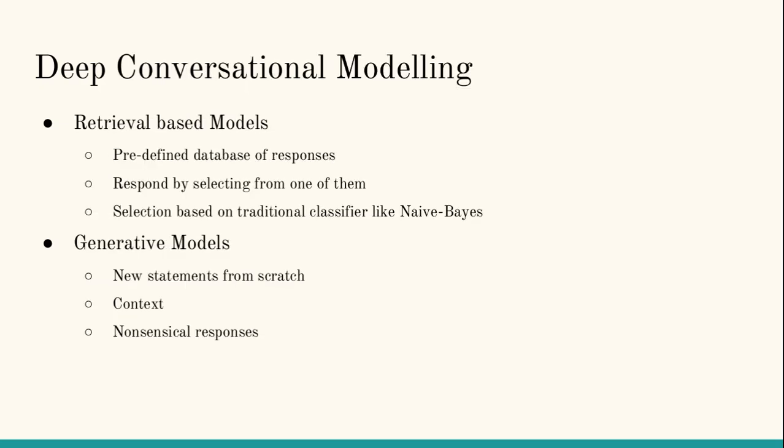We'll take a look at deep conversational modeling now. Conversational modeling using deep learning can be broadly categorized into two kinds of models: one is the retrieval-based model and the second one is a generative model. In retrieval-based models, we have a predefined database of responses, just like traditional conversational agents. These systems respond to any input provided by the user by selecting from one of them, and unlike traditional conversational agents, these agents select the canned response by using one of traditional classifiers, normal machine learning classifiers like Naive Bayes or an ensemble of other classifiers.